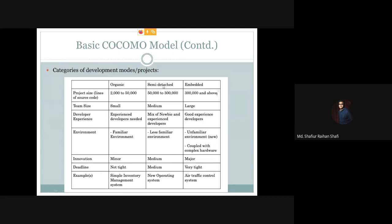Now, about the semi-detached project: its characteristics have values between those of the organic and embedded categories — they are average values of the two. The project size for semi-detached is 50 to 300 KLOC. The development team size is medium — larger than the organic project's team size.